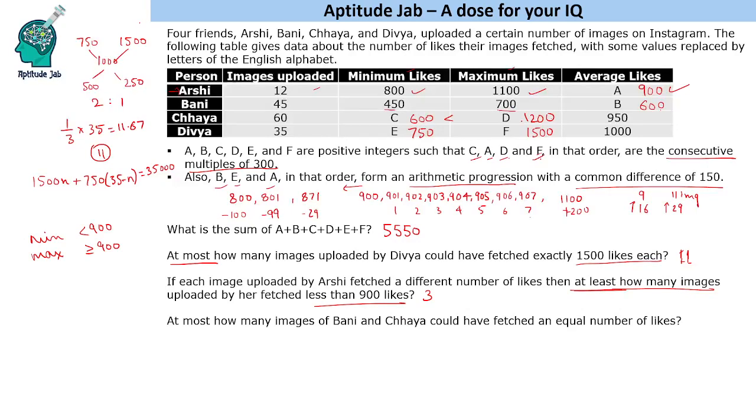Next question: At most how many images of Bani and Chhaya could have fetched an equal number of likes? This is a challenging question. It is quite challenging because it is very difficult to visualize in terms of average. Let's see how we do this.